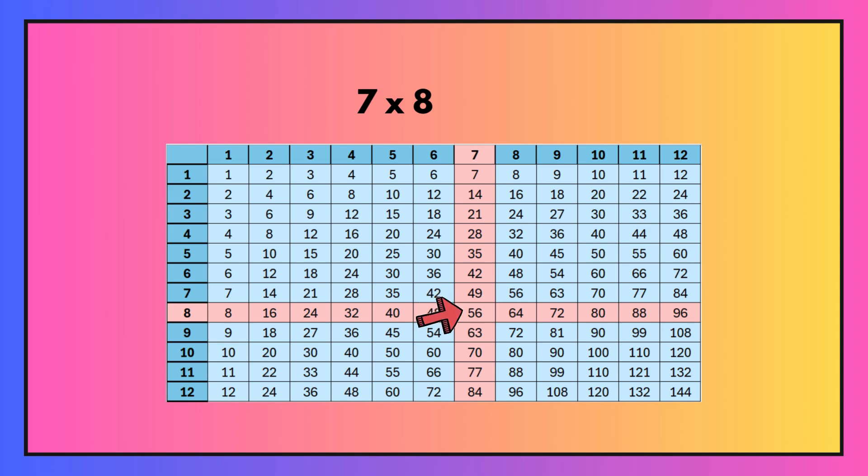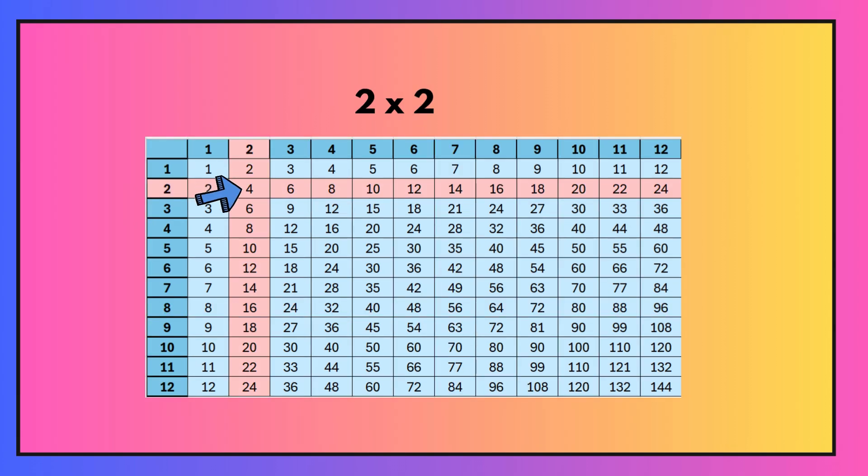So your answer to seven times eight is 56. Two times two. So I've selected two from the top and two from the side, followed them down and across and they meet at number four. So your answer to two times two is four.